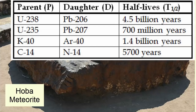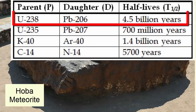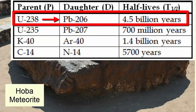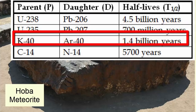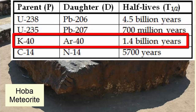Fortunately, there are a number of other pairs, such as uranium-238, which decays to lead-206 and has a half-life of 4.5 billion years; uranium-235, which decays to lead-207 and has a half-life of 700 million years; and potassium-40, which decays to argon-40 and has a half-life of 1.4 billion years.